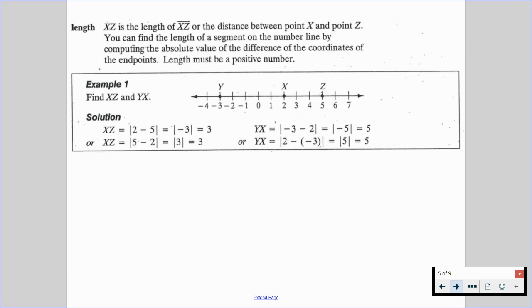So we also have something that is called length. XZ is the length of segment XZ or the distance between point X and point Z. You can find the length of a segment on the number line by computing the absolute value of the difference of the coordinates of the endpoints. Length must be a positive number.